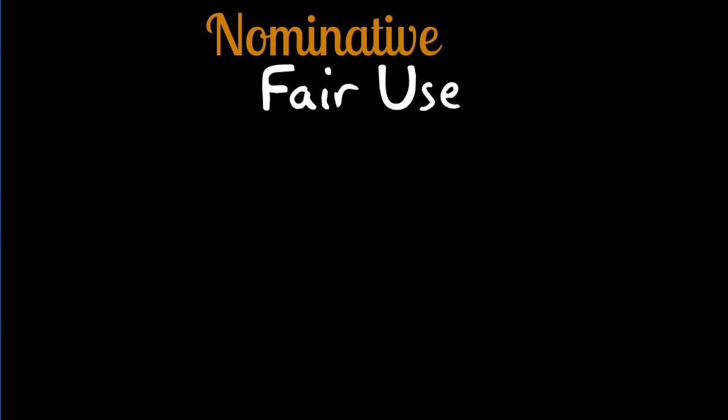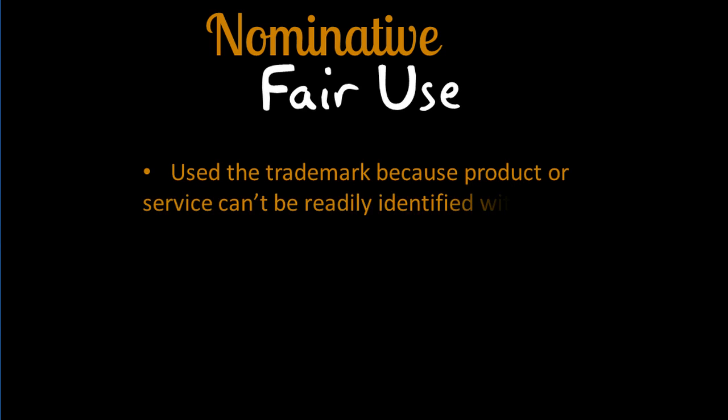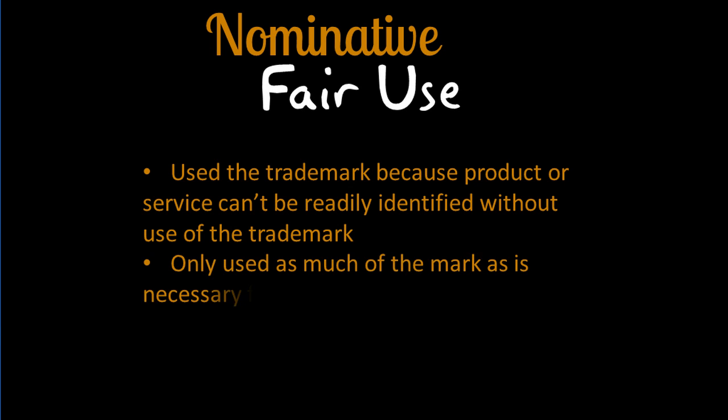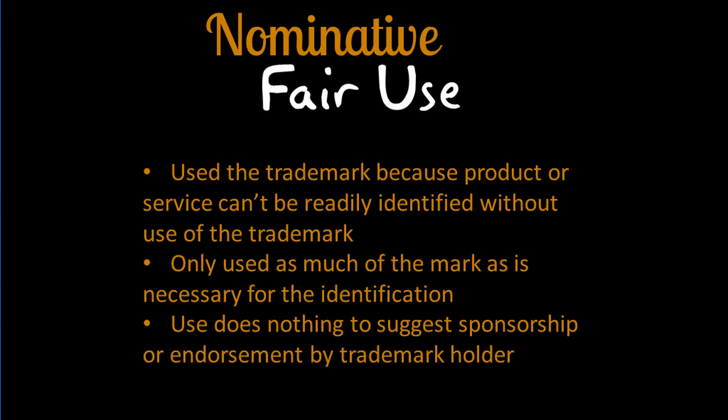Some courts have also adopted the idea of nominative fair use. This type of fair use comes from the idea that sometimes it is necessary to use a trademark to identify and talk about another party's products or services. In order to establish nominative fair use, a party would have to prove one of the following: it used the trademark of another because the product or service cannot be readily identified without using the trademark; it only used as much of the mark as is necessary for the identification; or the use does nothing to suggest sponsorship or endorsement by the trademark holder. If a defendant can successfully raise one of these defenses, the suit should be dismissed.